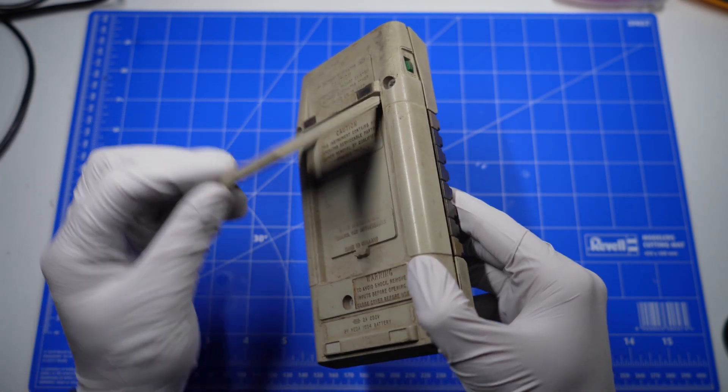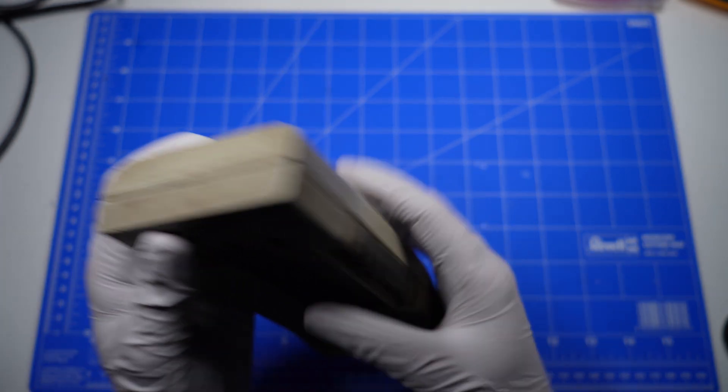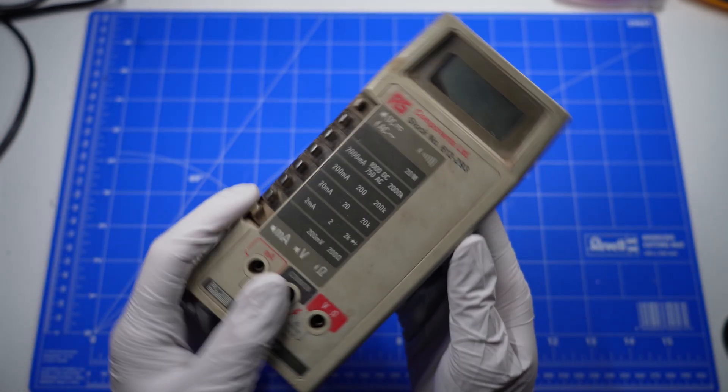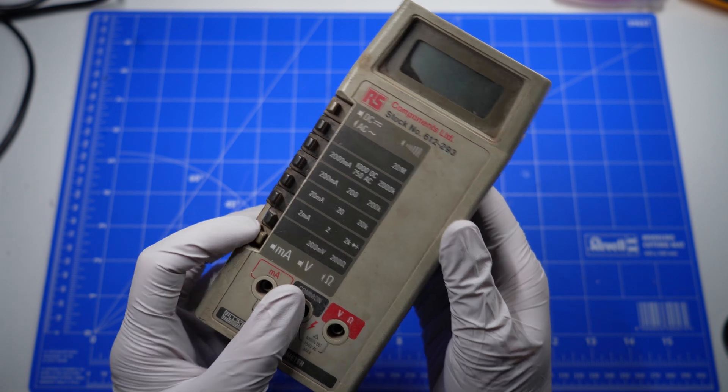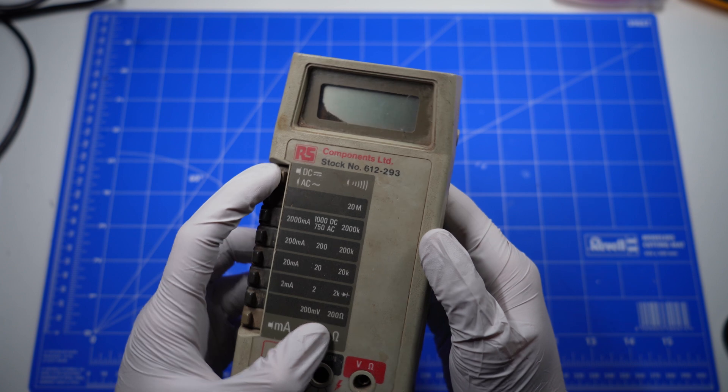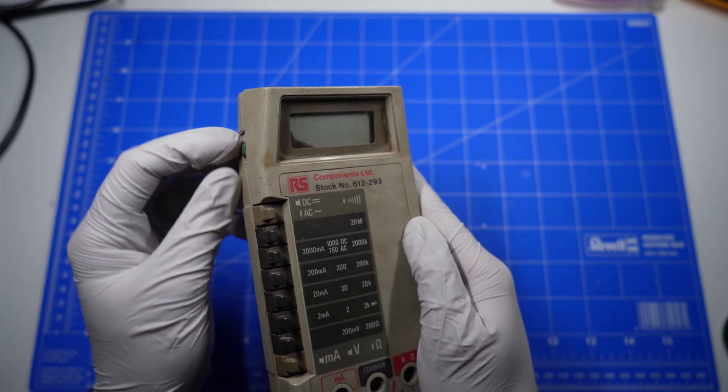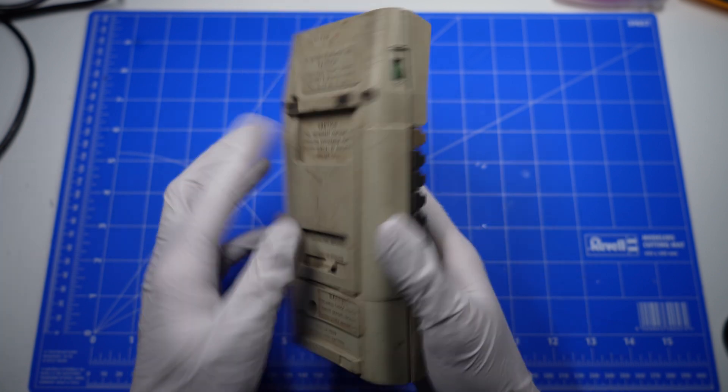Although it doesn't have any cracks or particularly deep scratches, so after a deep thorough clean, it should look good as new. All the buttons seem to work. Trying the on and off switch, but clearly it's either not working or there's no battery inside.